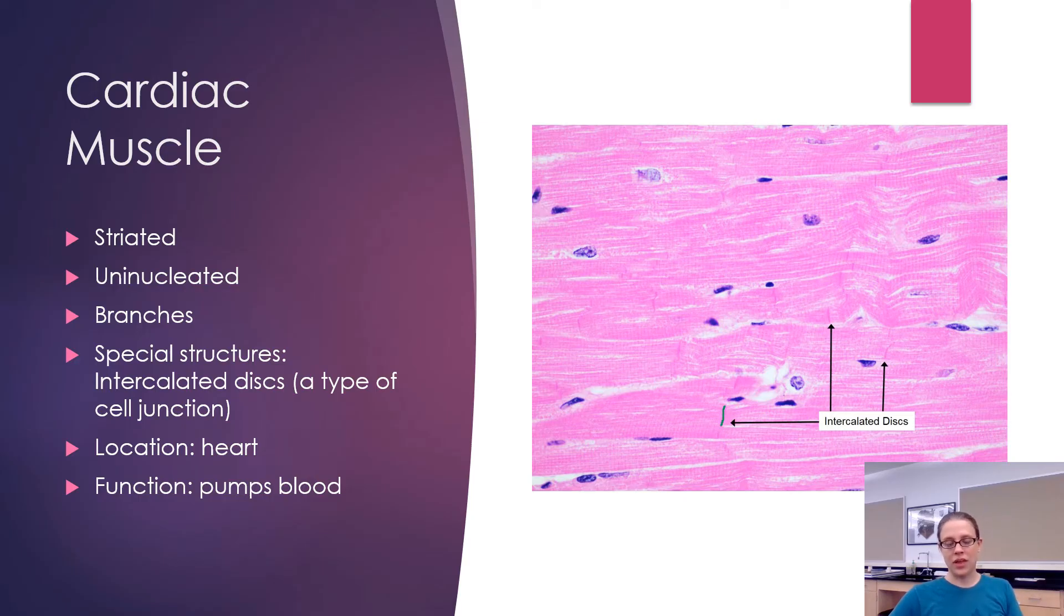This allows for the muscle contraction in one cardiac cell to spread to the cardiac cell next to it, which is why your heart can beat in a rhythmic fashion and it can beat as a unit. Quite obviously the location is the heart and the purpose is to pump blood.